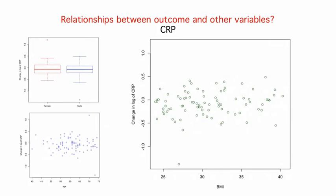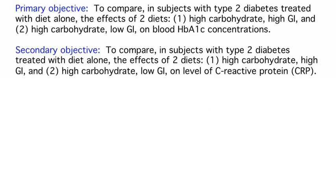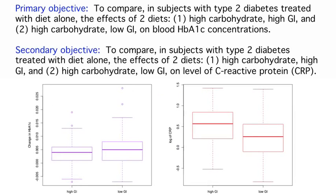So now we've made a lot of progress. We have clean data, we've made a decision to work with the log transformed CRP, and we know a few things to watch for, in particular a couple of outliers, and the possible relationship between HbA1c and BMI. In the next video, we'll focus on our primary and secondary objectives, and we'll carry out formal inferential procedures to see if any of the differences that we've observed here in our preliminary analyses are statistically significant.